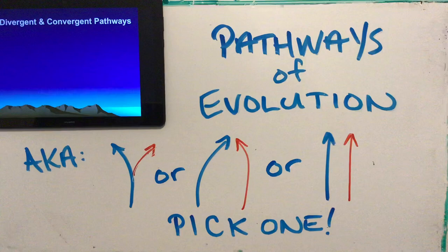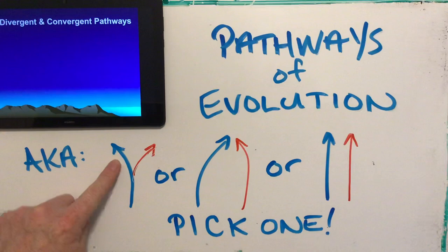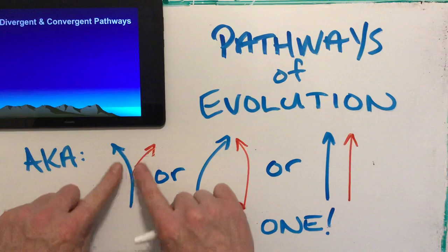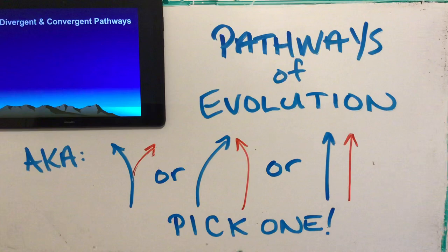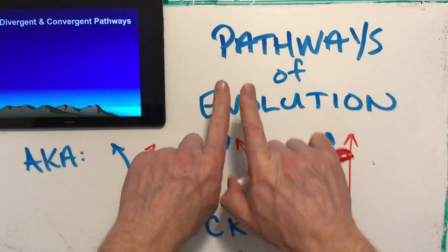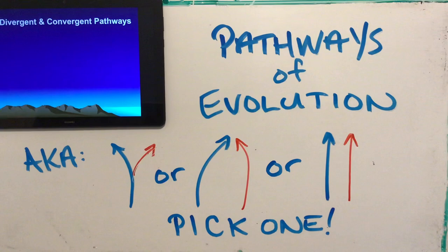The first two pathways are divergent and convergent evolution. Divergence is a split — imagine the blue arrow is the highway and the red arrow is an off-ramp splitting away. A convergent pathway is like an on-ramp merging onto the highway. So divergence is splitting apart, convergence is coming together. Our last pathway, which isn't on this slide, is co-evolution.